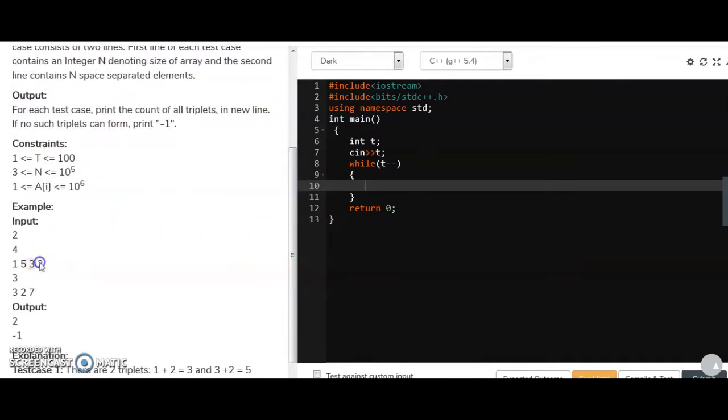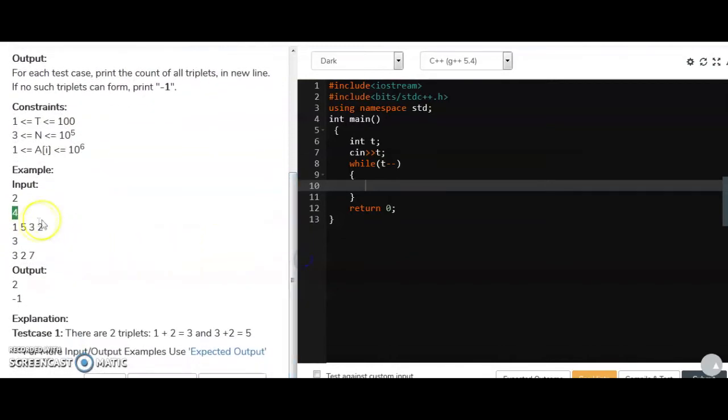So let's see the example first. We have an array of four integers as given here 1, 5, 3, 2. So what are the triplets here? That is 1 plus 2 equals to 3. So this is one triplet. 3 plus 2 is equals to 5. So this is another triplet. So total there are two triplets in this array. So output is 2. So let's see the concept and then we will implement the code part.